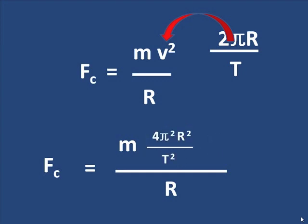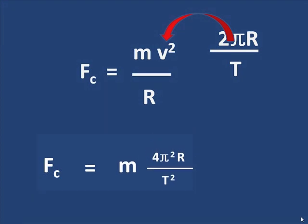And I notice that the r will cancel one of the r's in r squared. And I'm left with m 4π² r over T². And there is my formula.